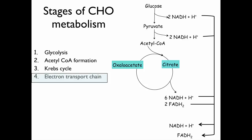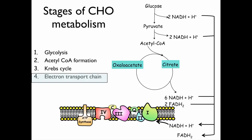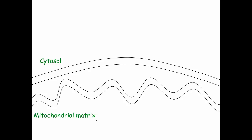All of these reduced coenzymes can move into the mitochondria, specifically into the electron transport chain. Here I've shown a series of proteins found on the inner mitochondrial membrane, and we call this the electron transport chain. Mitochondria has a double-layered membrane — we've got our outer mitochondrial membrane and our inner mitochondrial membrane. The space between the two membranes is called our intermembrane space, and the inside of the mitochondria is called the mitochondrial matrix.